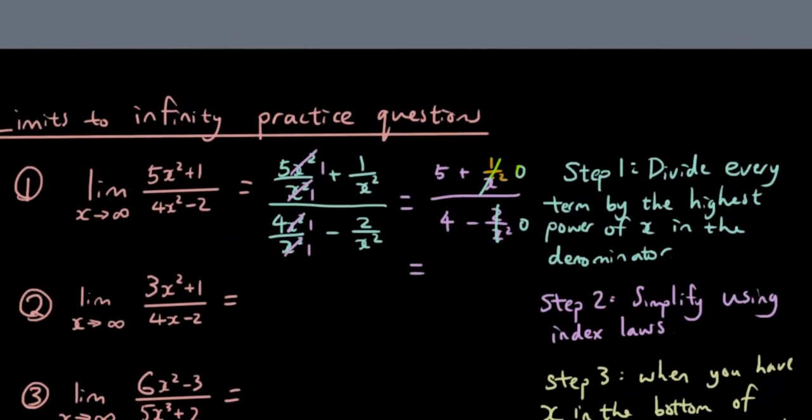This is because if you have whatever number you want, let's say 20, when you divide by a very large number, so let's say you divide it by 2 million, it pretty much always gives you a number very close to 0. So therefore, if you're dividing 1 by infinity, because x is approaching infinity, if you're dividing 1 by infinity², then you're dividing 1 by a very large number, so the answer is going to be 0.